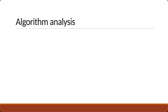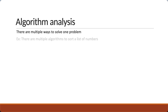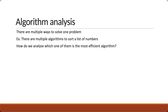In the previous video, I mentioned there are multiple ways to solve one problem. For example, there are multiple algorithms to sort a list of numbers. Now if that is the case, how do we analyze which one of them is the most efficient algorithm?